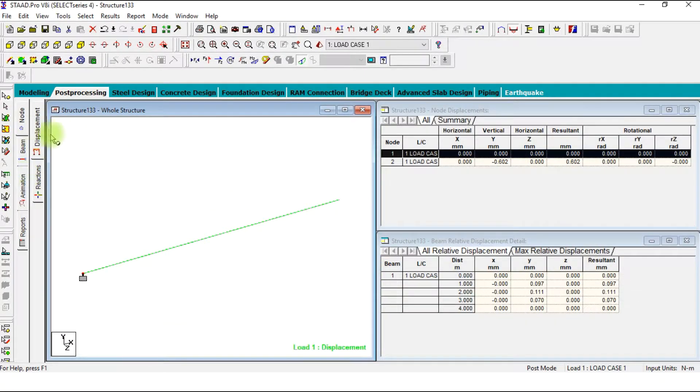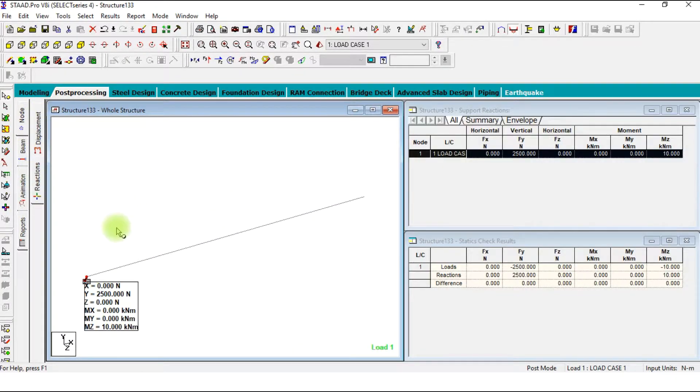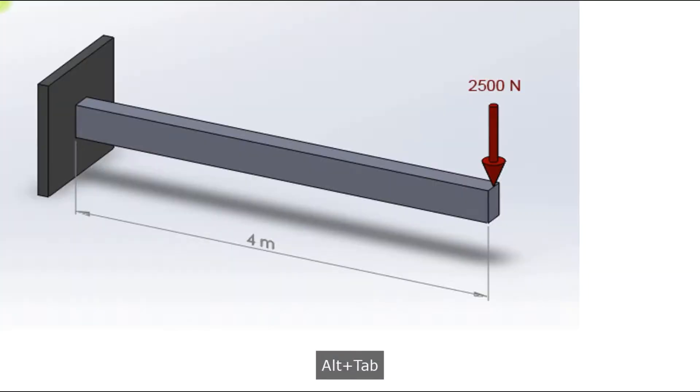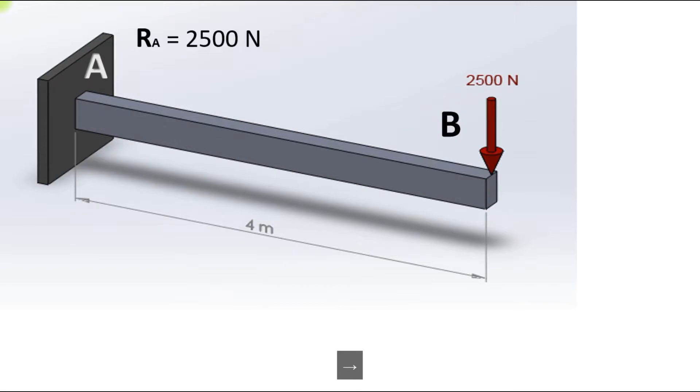Check the result of reactions. The reaction is actually 2500 Newton and moment at this will be 10 kN meter. Let's check it out in our case. Reaction at A will be 2500 Newton. Moment at A is force into perpendicular distance, is 10,000 Newton meter, so 10 kN meter.